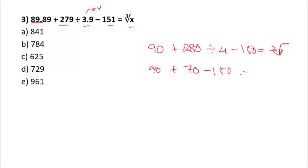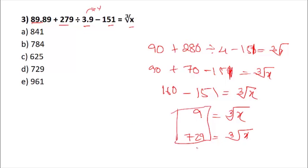If you see here, this is 90 plus 70, which is 160, minus 151, equals cube root of x. You can keep it as 151. 90 plus 70 is 160 minus 151 equals 9, which is cube root of x. Take the cube on both sides: x equals 9 cube, which is 729. Your correct option would be D.